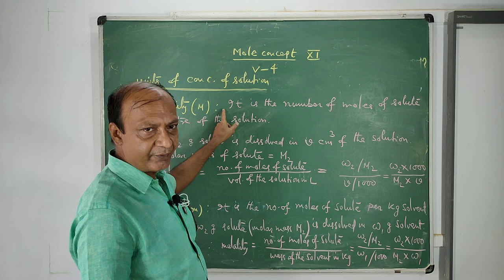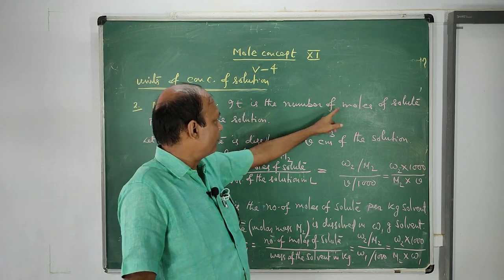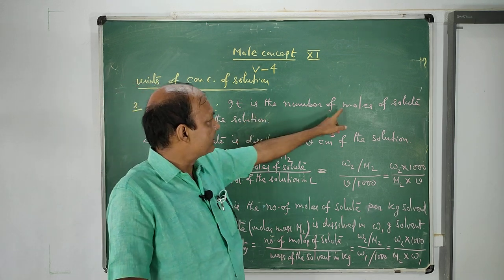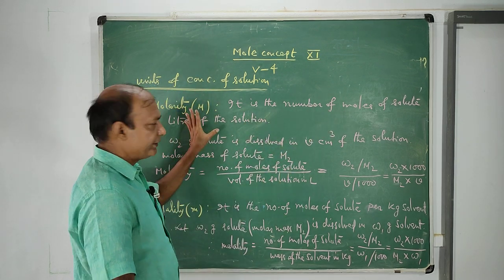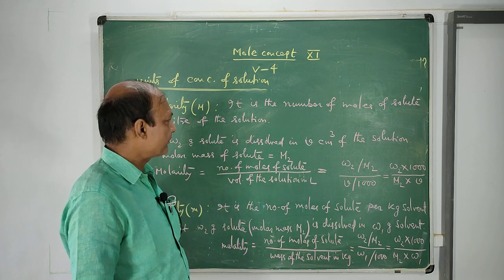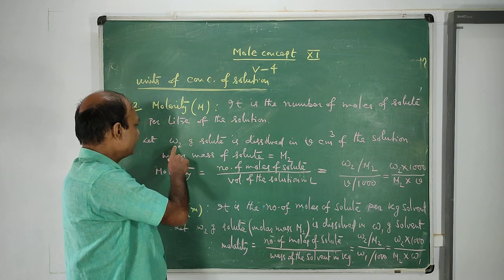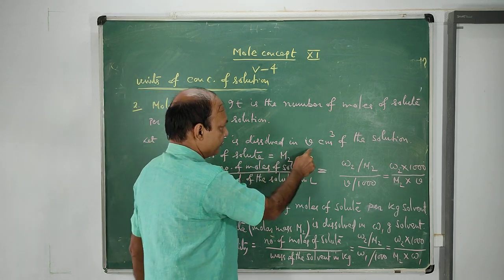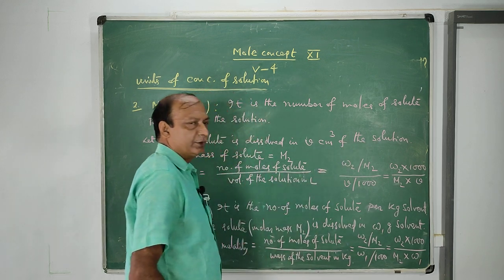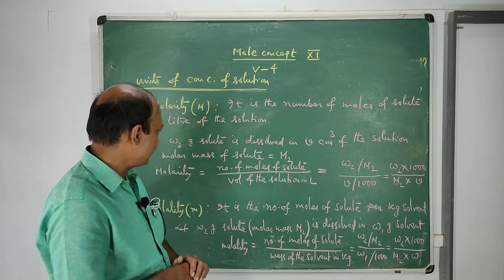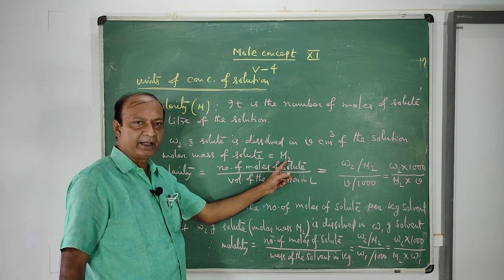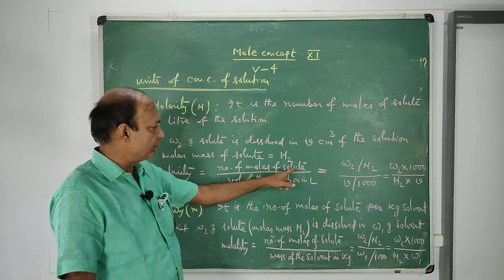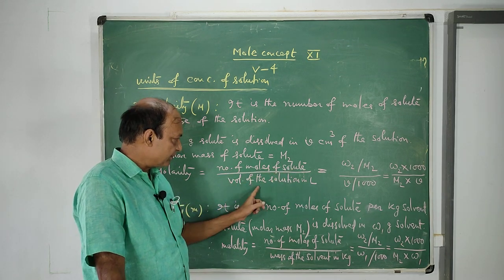Molarity. By definition, molarity is the number of moles of solute per liter of the solution. To derive the relation, we assume that W2 gram of solute is dissolved in V centimeter cube of the solution. The molar mass of the solute is taken as M2. Therefore, by definition, molarity equals to number of moles of solute by volume of the solution in liter.